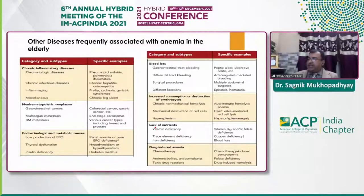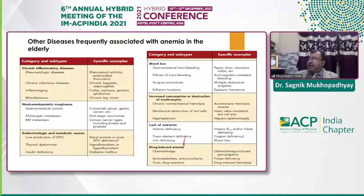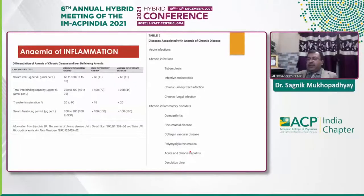There is a big list of other causes and associated factors with anemia in older age. Common ones include rheumatoid arthritis, polymyalgia rheumatica, chronic hepatitis, and osteomyelitis. Gastrointestinal bleeding is a very important cause of anemia in the older age group, sometimes having a specific etiology and sometimes diffuse GI bleeding associated with drugs. Chronic non-mechanical and mechanical hemolysis is also responsible in patients with heart valve replacements, and drug-induced anemia due to chemotherapy, anti-metabolites, and toxic drugs are also responsible.